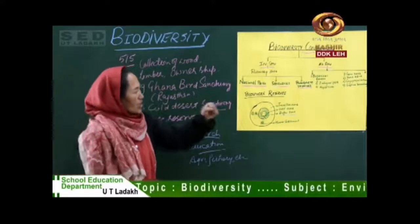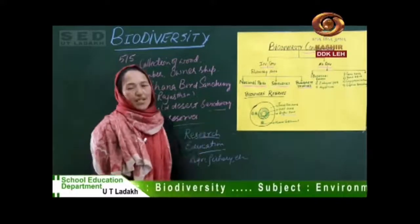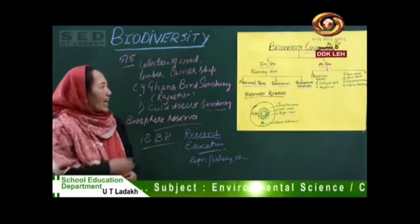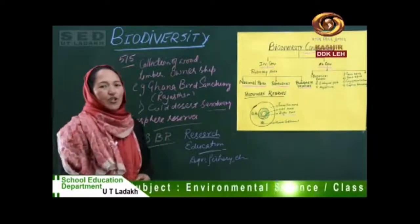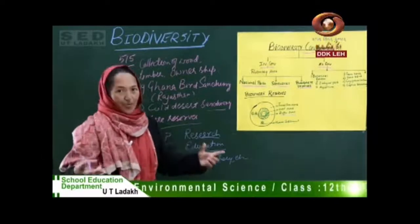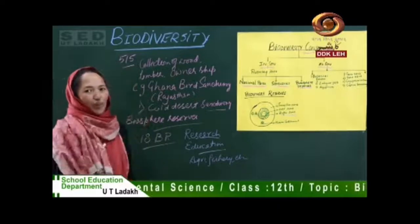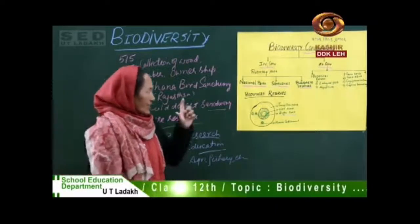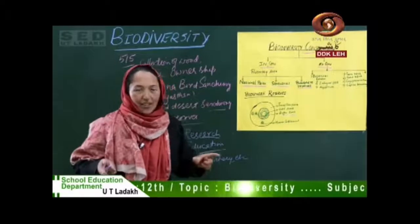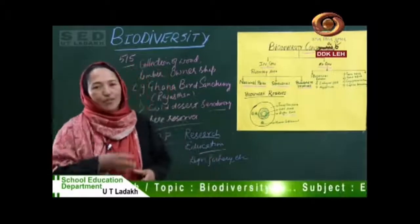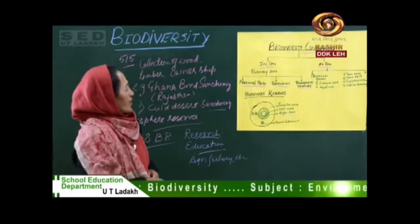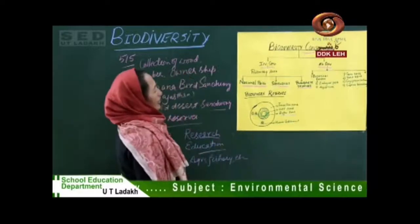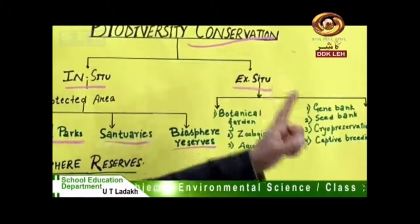This is how we have a biosphere reserve. They require a very large space of about 500 square kilometers, which is why we are not able to demarcate or mark the biosphere reserve. This completes the in-situ chapter. Now let's move to ex-situ conservation.